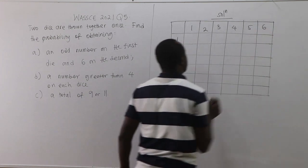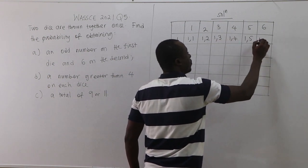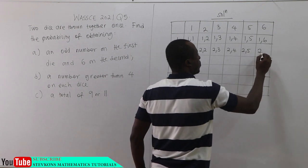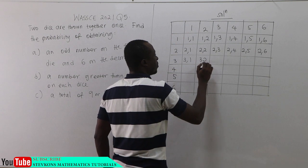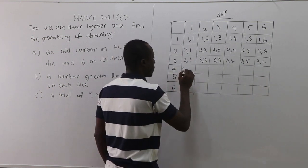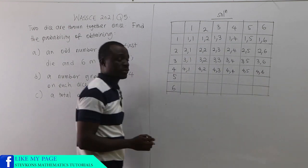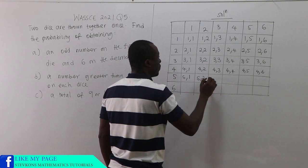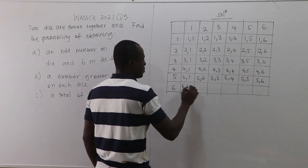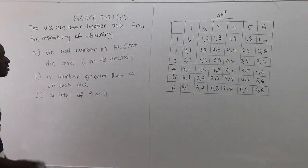So clearly when you toss the two dice, the outcomes are: (1,1), (1,2), (1,3), (1,4), (1,5), (1,6), (2,1), (2,2), (2,3), (2,4), (2,5), (2,6), (3,1), (3,2), (3,3), (3,4), (3,5), (3,6), (4,1), (4,2), (4,3), (4,4), (4,5), (4,6), (5,1), (5,2), (5,3), (5,4), (5,5), (5,6), (6,1), (6,2), (6,3), (6,4), (6,5), (6,6). These are the outcomes from the two dice.